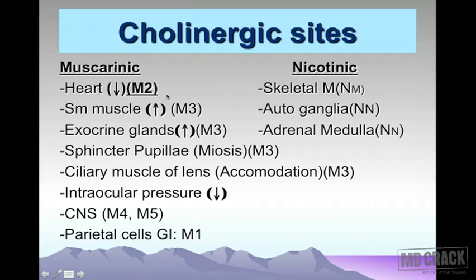Due to the action of the cholinergic receptor site in the eye, the cholinergic nervous system leads to a decrease in intraocular pressure. There is also a cholinergic receptor site in the central nervous system, and you also have a cholinergic site in the parietal cells.